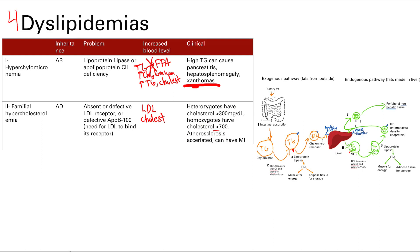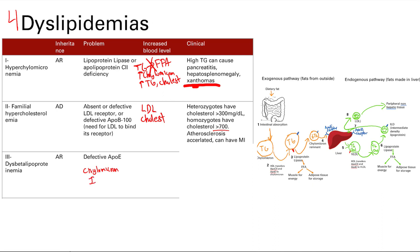Next is dysbetalipoproteinemia, autosomal recessive. This is a defect in the ApoE lipoprotein. Remember, ApoE is needed to direct the chylomicron remnants and IDL remnants back to the liver. So if you don't have ApoE, those remnants won't get sent back to the liver; instead they hang out in the blood. You're going to have increased levels of chylomicrons and increased levels of VLDL, since VLDL is a precursor to IDL and ApoE removes the remnants of both.